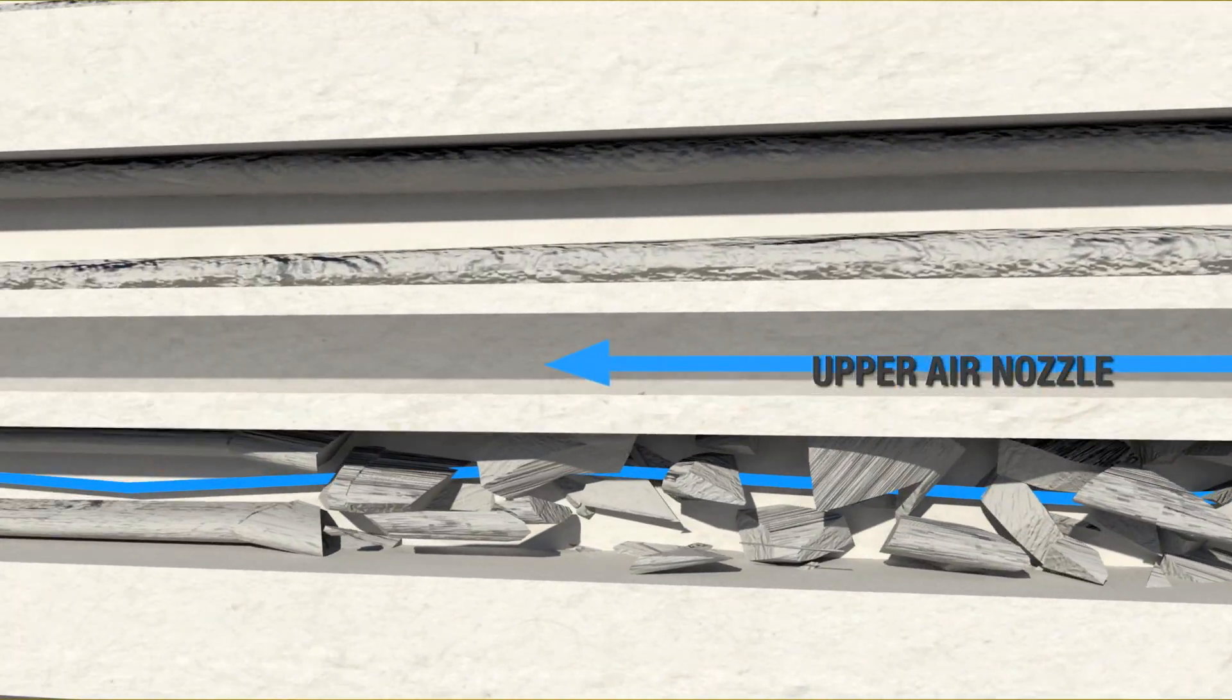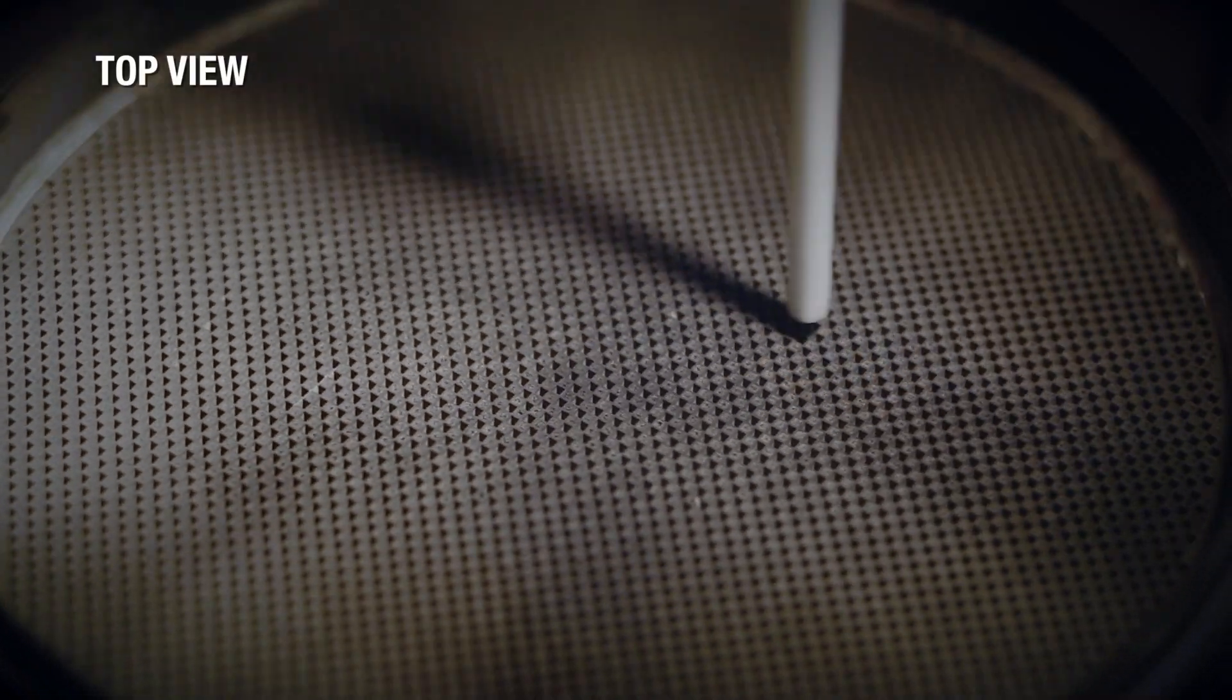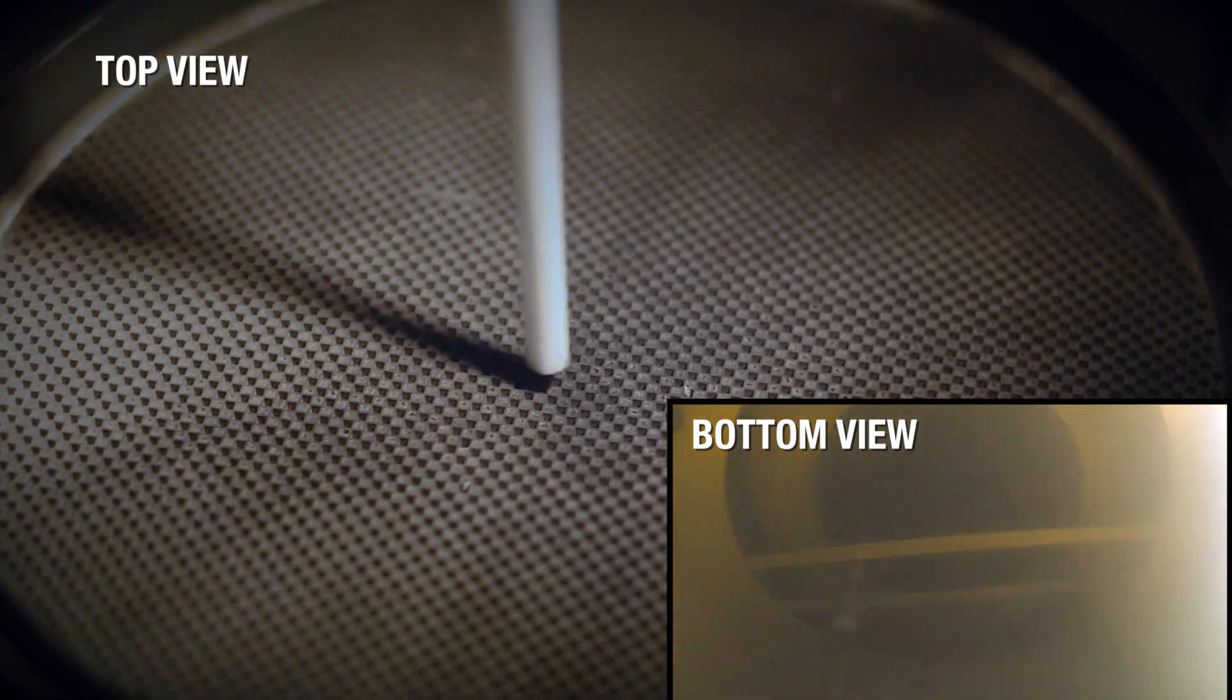The upper air nozzle blows out the loosened material. The FSX Trap Blaster is the only process that cleans both sides of the DPF.